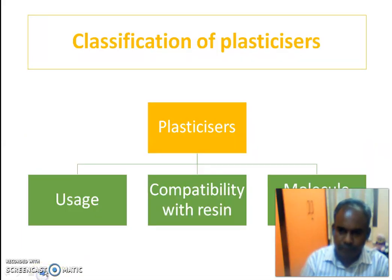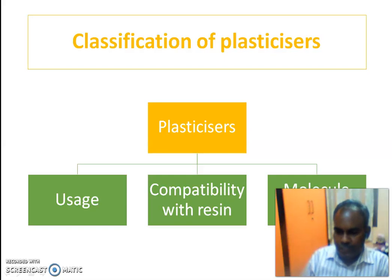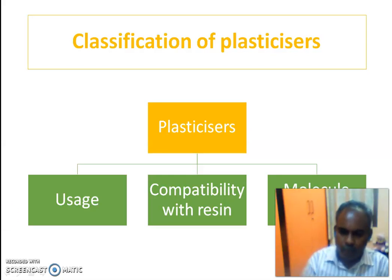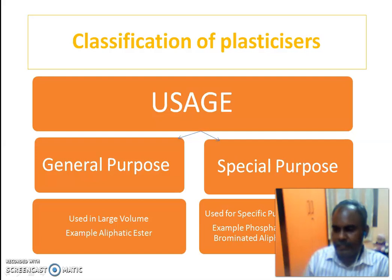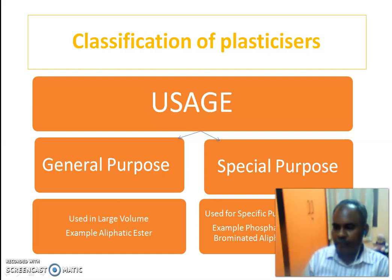The classification of plasticizers is based on three criteria. The first is by usage: general purpose and special purpose. General purpose plasticizers are used in large volumes — for example, aliphatic esters. Special purpose plasticizers are used for specific purposes.